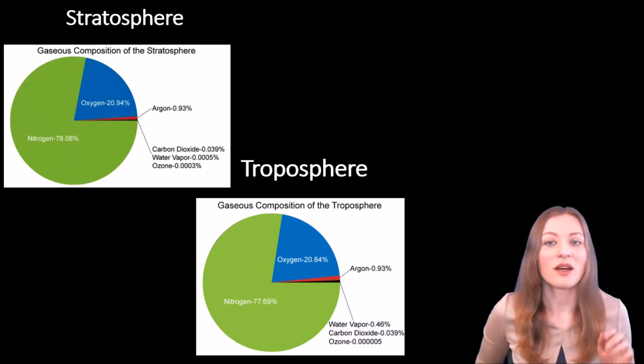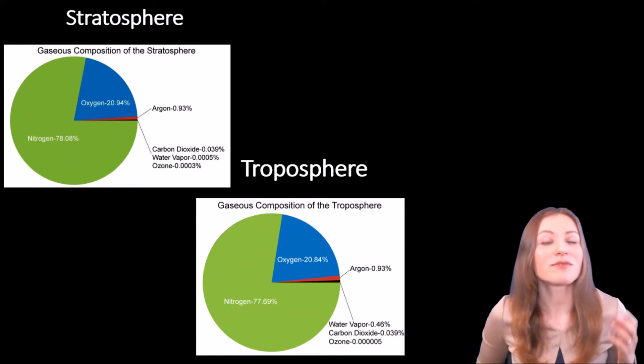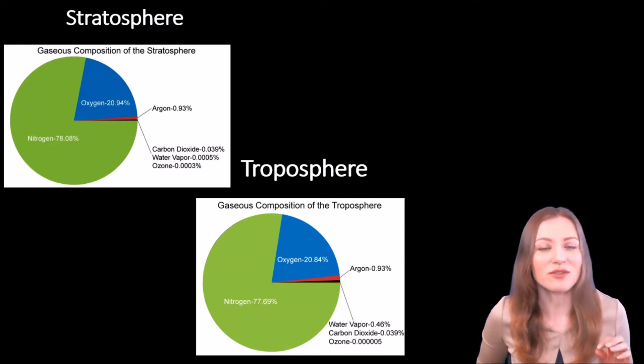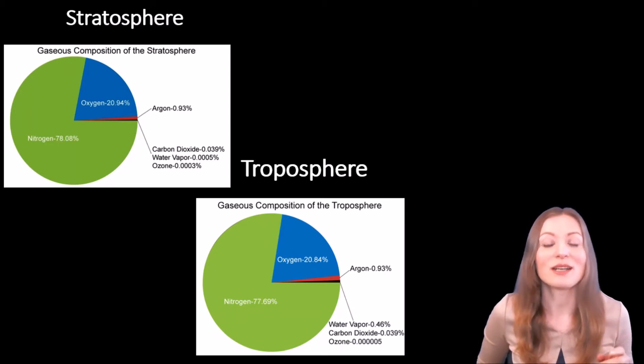As you see from the chart, both stratosphere and troposphere consist mostly of nitrogen and oxygen. But what differences can you see? As you learned in a previous lab, the stratosphere has higher concentration of ozone. But the troposphere has the higher concentration of water vapor and particulates. And can you guess why this is the case?